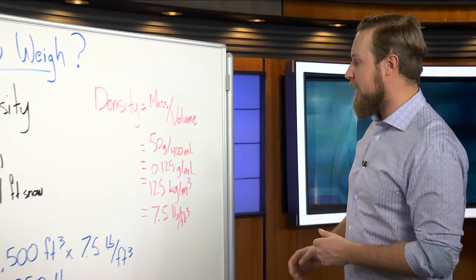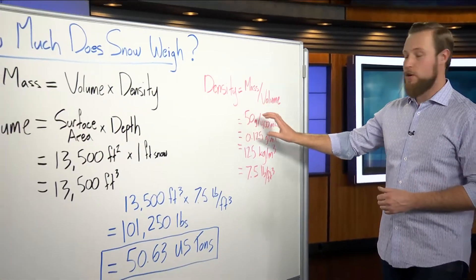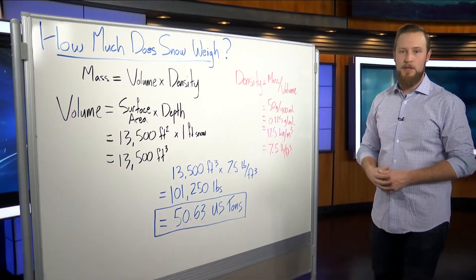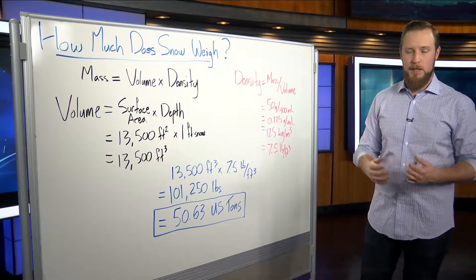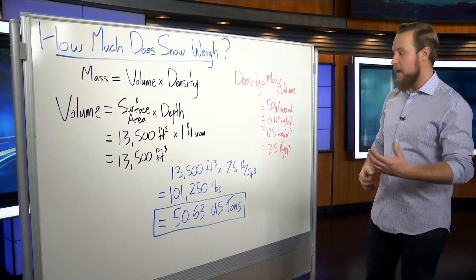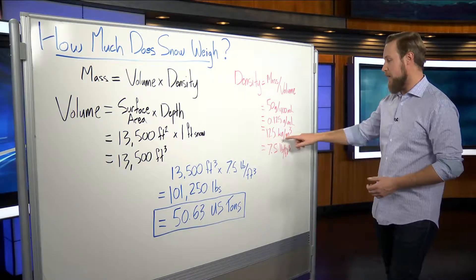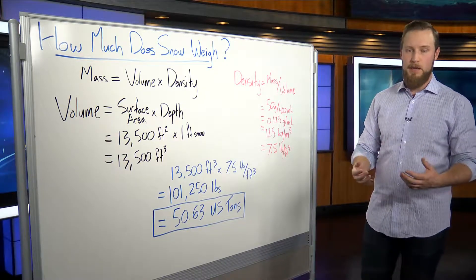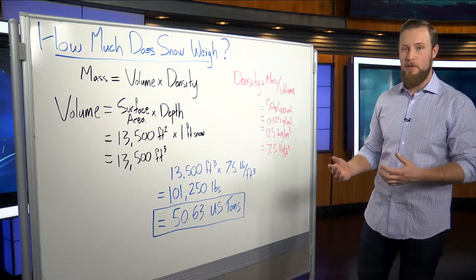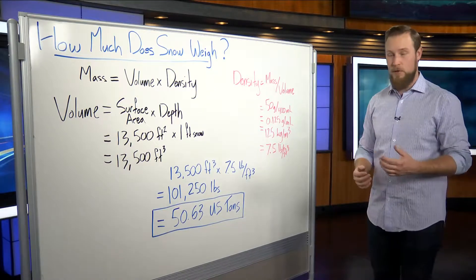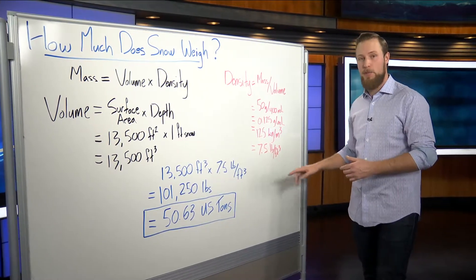Out there right now, the results I got were 50 grams of water content in 400 milliliters of snow. Obviously these are metric units. Through some calculations, we can take this down to get kilograms per meter cubed, which is very easily converted into pounds per square foot. The result of that conversion is 7.5 pounds per square foot.